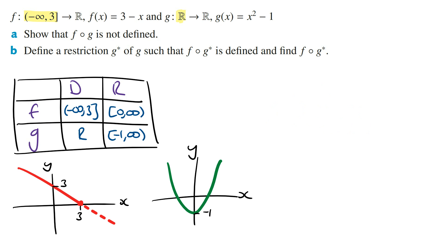Part b: Define a restriction g star of g such that f of g star is defined, and find f of g star. What we need to do is change or restrict the domain of the function g so that its range is equal to or a subset of the domain of the outer function f. The function g with its restricted domain will then be called g star.